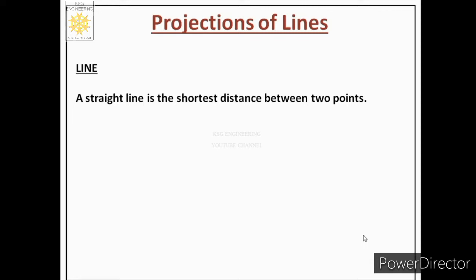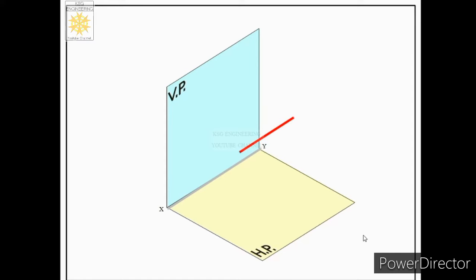Let us first see what is a line. A straight line is the shortest distance between any two points. When we draw images of a line, we consider the line as the shortest distance between two points. So if we want to draw the image of any particular line AB, we consider the two end points of that line and project those two end points onto the vertical plane to obtain the front view of the line.